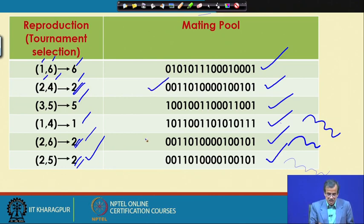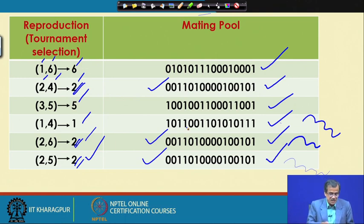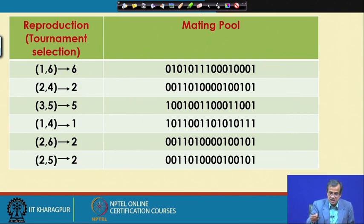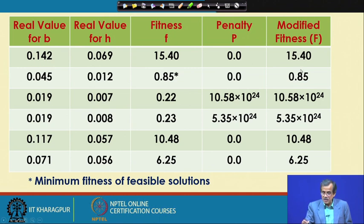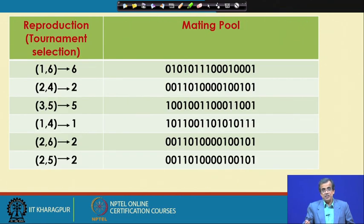The population size is only 6, and out of 6, the second GA string has been copied thrice. The reason is, if you see the fitness value, the second GA string is actually a very good GA string in terms of fitness value — it is 0.85. In fact, the second GA string was the best in the initial population and we have got three copies of this particular GA string in the mating pool.